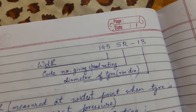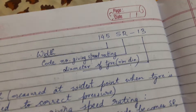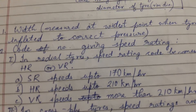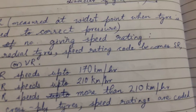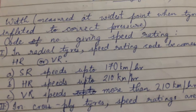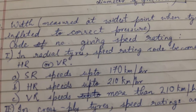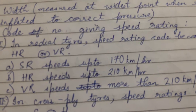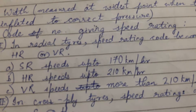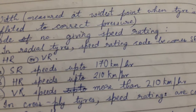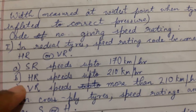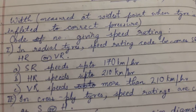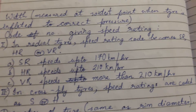SR is written, but the main part is the first letter, S, because it gives a code number indicating the speed rating. In radial tires, the speed rating code is SR, HR, or VR. SR means speed up to 170 km/h, HR means speed up to 210 km/h, and VR means speeds more than 210 km/h.